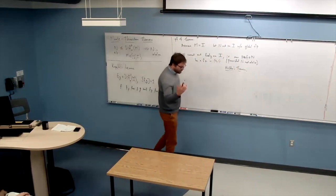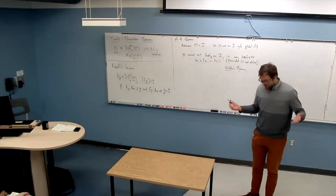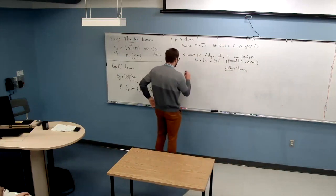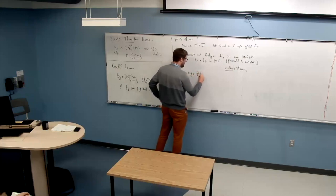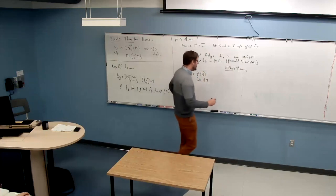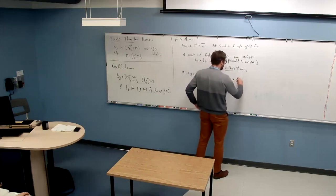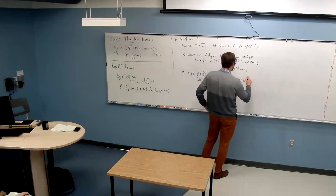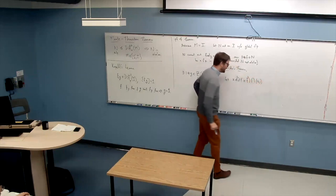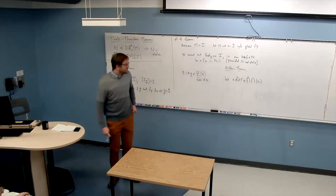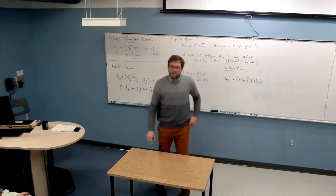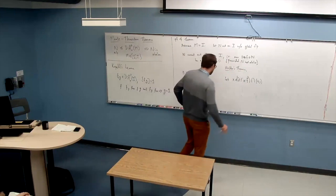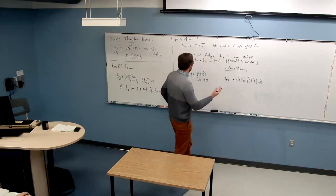Now we should use the nilpotency somehow. We've already used the non-abelianness of N to get an element f which is non-trivial and has a fixed point. Because N is nilpotent, there exists a non-trivial element g in the center of N. Let x be in the boundary of Fix(f) intersected with (0,1) — a point on the boundary of the fixed point set of f, where on one side f acts non-trivially.